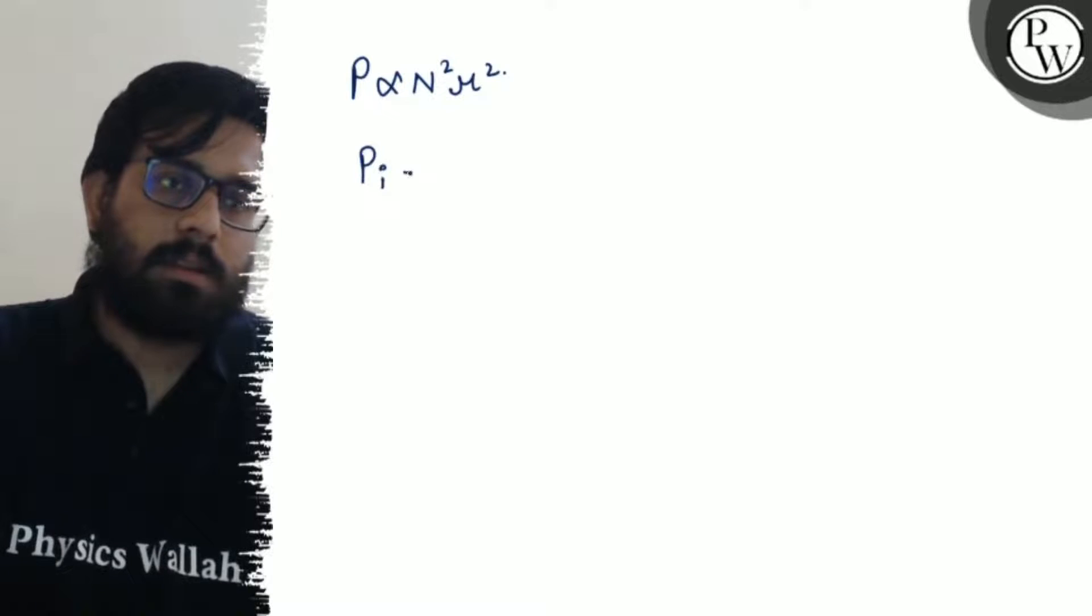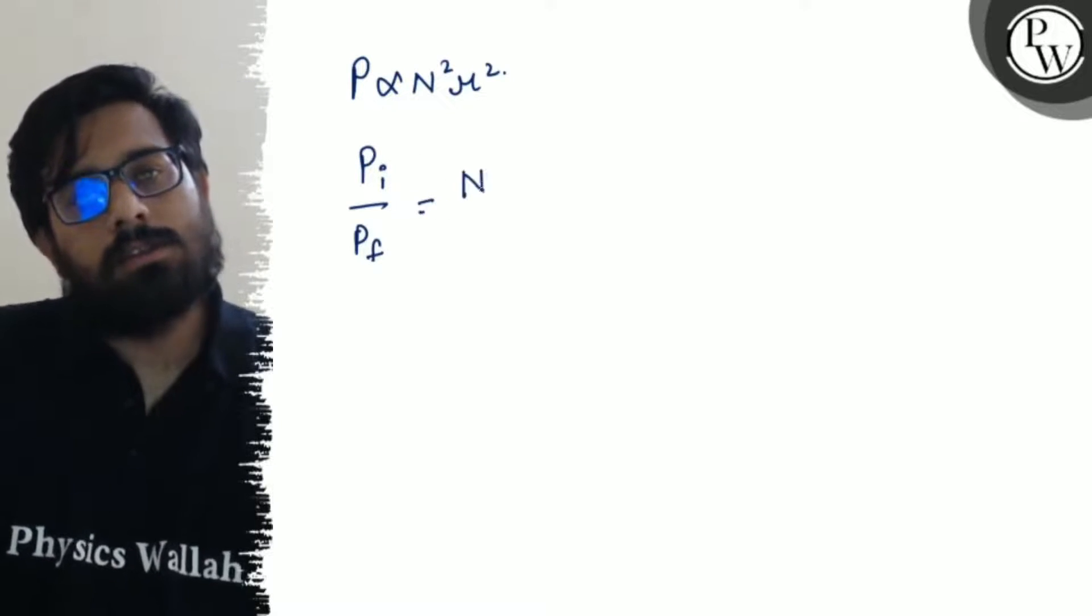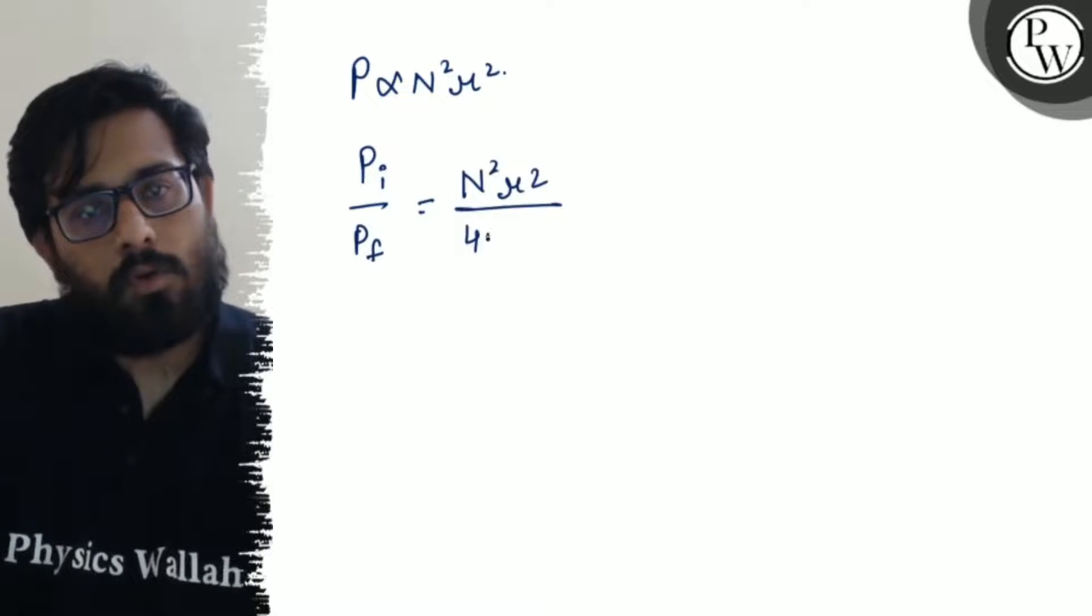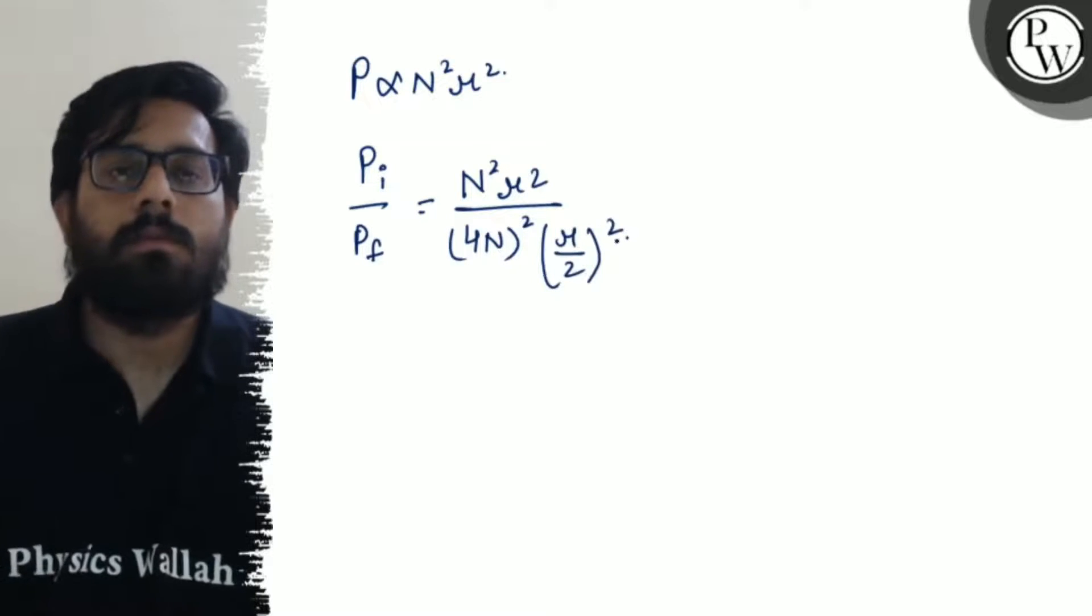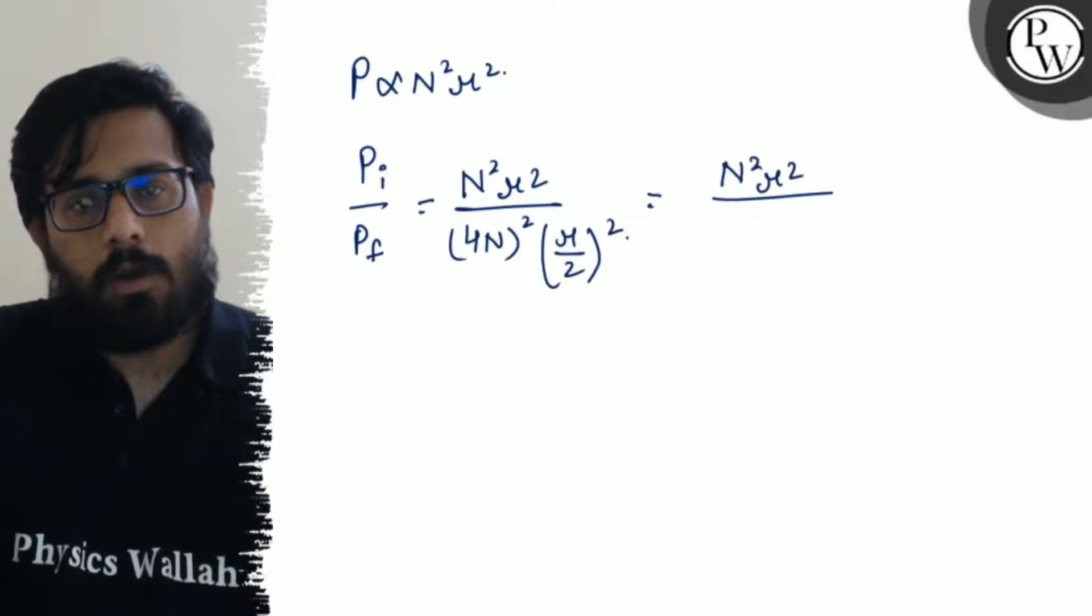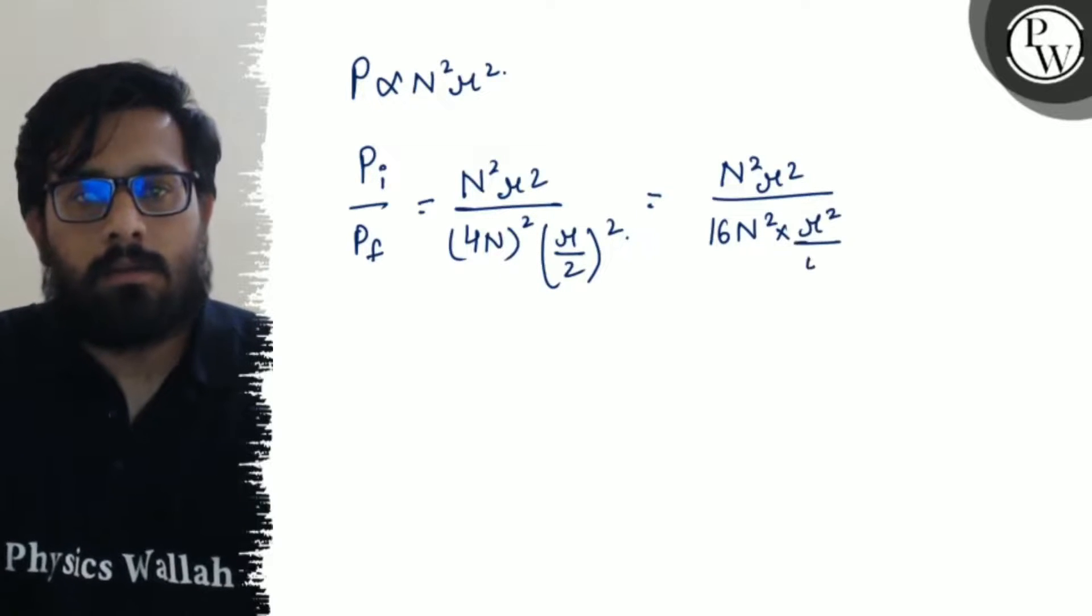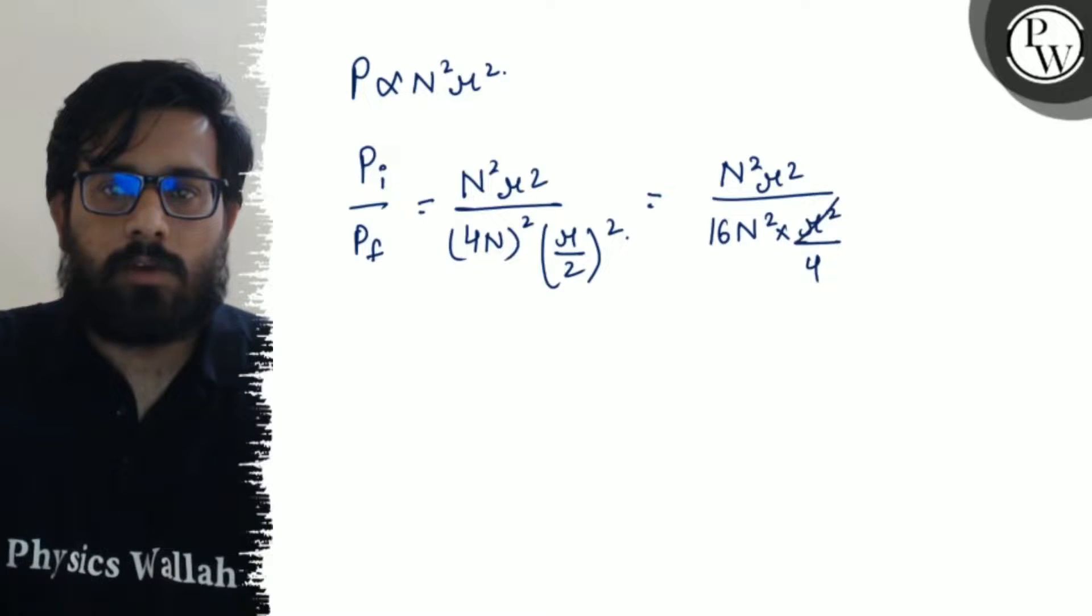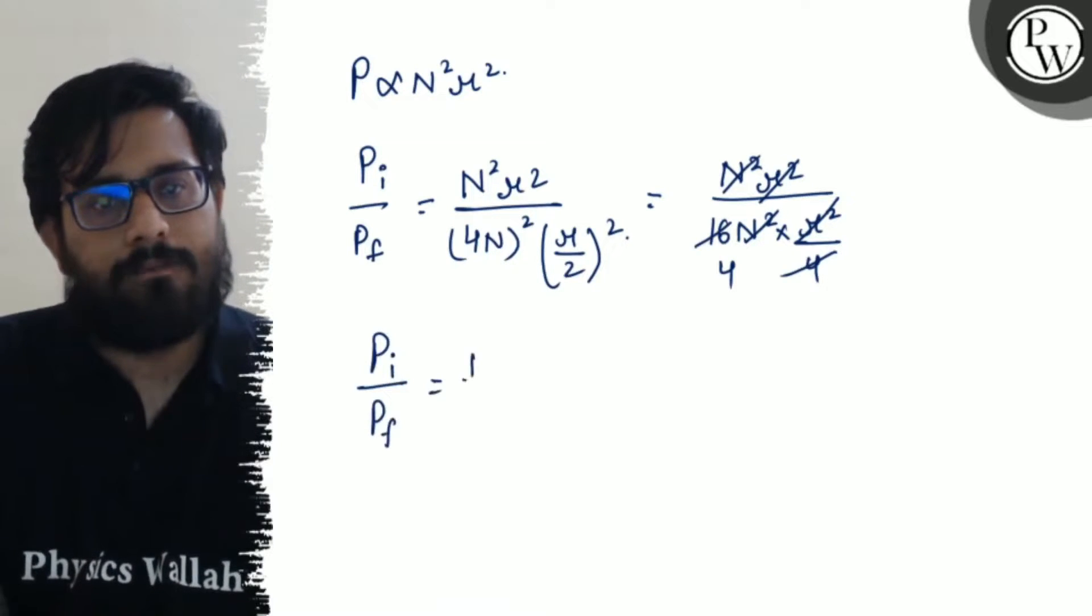So initial power upon final power, this can be written as N²r² upon (4N)² times (r/2)². Now solving it: N²r² upon 16N² into r²/4. So r² to r² get cancelled out, N² to N² get cancelled out, 4 times 4 is 16. So initial power upon final power comes to be 1 by 4.